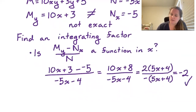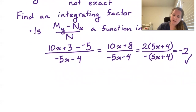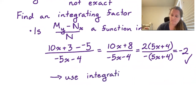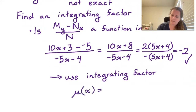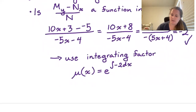We have a simple function in x, so we can use the integrating factor. Mu of x is equal to e to the integral of -2 dx, which gives us mu equal to e to the -2x.